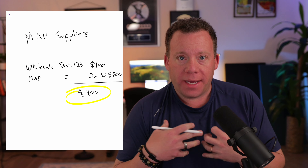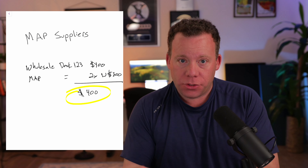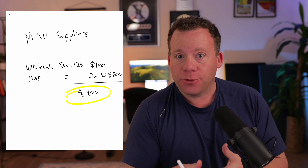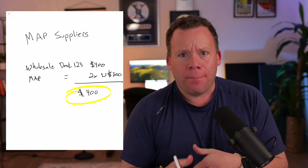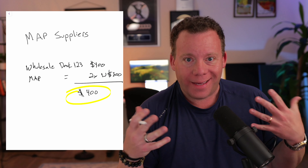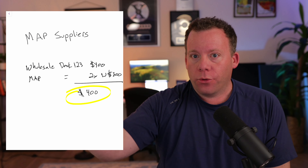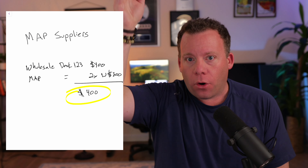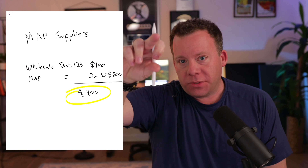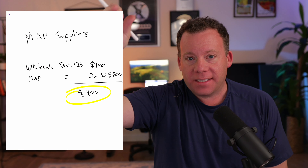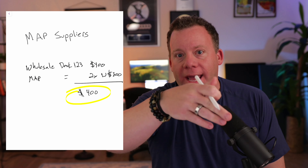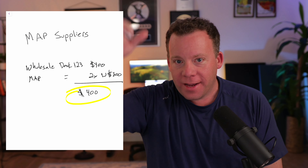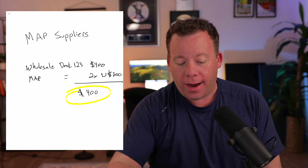One way suppliers might present MAP to you is by giving you the actual formula to use to do the math and figure out what it equals. If they do give this to you, a really quick easy tip is to open up a Google Sheet or Excel, have all of the wholesale prices, and then use a simple formula in the next column — equals A1 times 2, equals A1 times 2.5, whatever MAP is — drag that thing down and you have all your MAP prices.